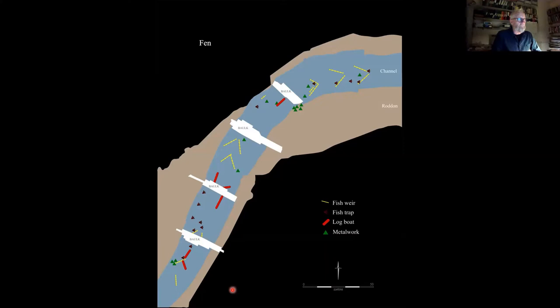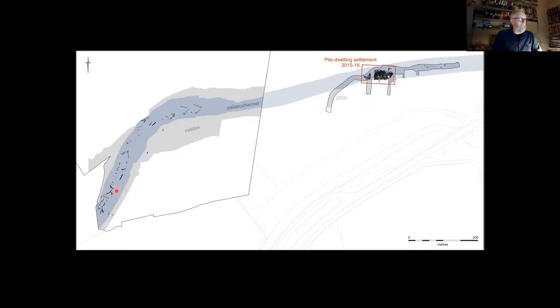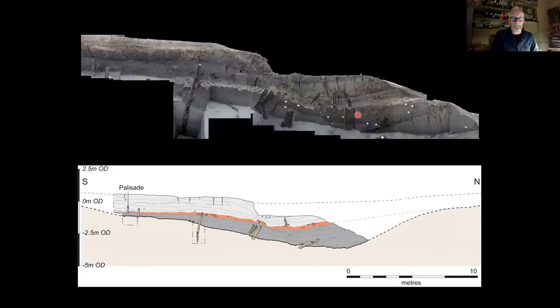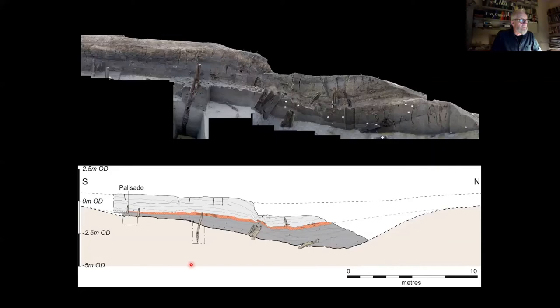In this same context we're finding bits of human remains and metalwork. In plan, our 320-meter stretch of paleo channel looks like this — the chevrons of the fish weirs, the fish traps as green triangles, metalwork, and then the various log boats in their locations within the channel. It's almost like an aerial view of a watercourse still in use. Placing that into its context, you can see the paleo channel with the weirs and traps, and then 200 meters downstream is the site of the Must Farm pile dwelling — sharing the exact same context as everything just described.